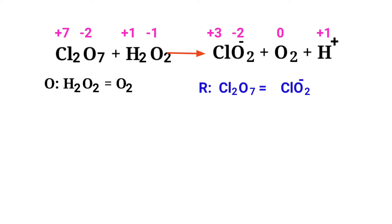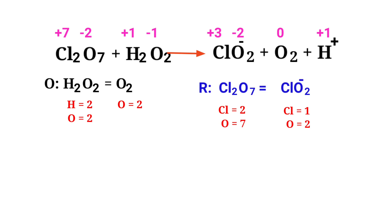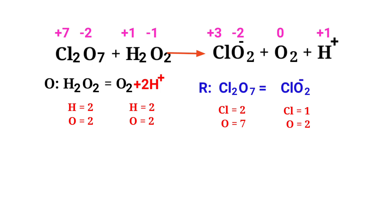Balance the number of atoms in the two half-reactions. In the oxidation half-reaction, to balance the hydrogen atoms, you can produce H⁺ ions. Now the number of atoms are balanced in the oxidation half-reaction.